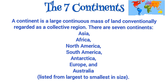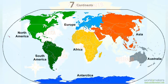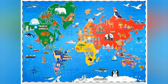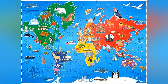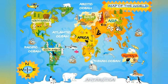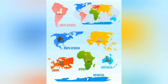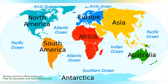What is a Continent? A continent is a large continuous mass of land conventionally regarded as a collective region. There are 7 continents which consist of Asia, Africa, North America, South America, Antarctica, Europe, and Australia — listed from largest to smallest in size. There are so many beautiful and exotic animals on each of the 7 continents, which we will learn about in future videos.